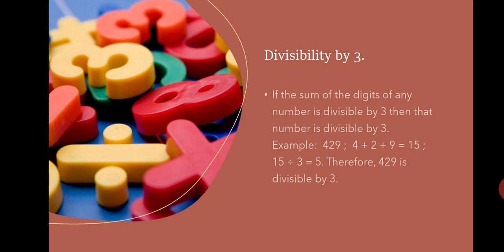Divisibility by 3: If the sum of the digits of any number is divisible by 3, then that number is divisible by 3. For example, 429. When we add 4 + 2 + 9, which is equal to 12, 15 divided by 3 is equal to 5. Therefore, 429 is divisible by 3.